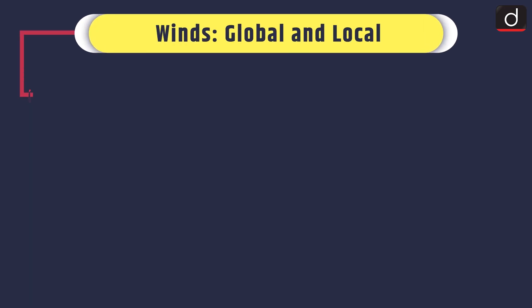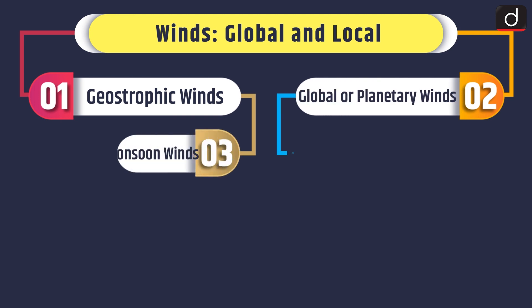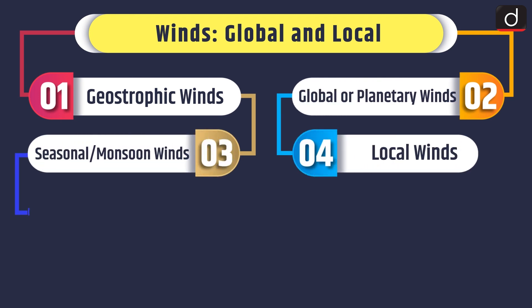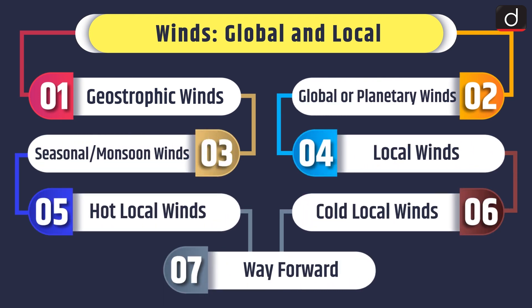Hello everyone, welcome to another series of mind map. Today's topic of discussion is winds: global and local. Under this topic we will discuss about geostrophic winds, global or planetary winds, seasonal or monsoon winds, local winds, hot local winds, cold local winds, and way forward.